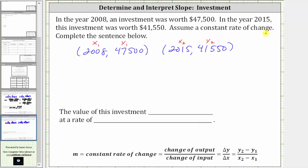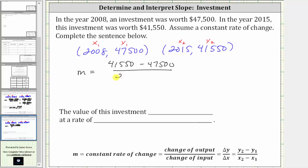Assuming a constant rate of change, we want to determine the constant rate of change. So the constant rate of change M is equal to the change in the output divided by the change in the input — the change in the investment worth divided by the change in years — which is given by this formula. So y sub two minus y sub one is $41,550 minus $47,500, divided by x sub two minus x sub one, which is 2015 minus 2008.